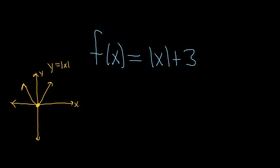If you wanted to plot some points you could. From where it starts — the peak — you go right 1 and up 1, put a dot. Left 1, up 1, put a dot. So you could have some points on the graph if you wanted to.